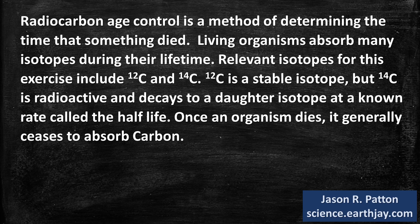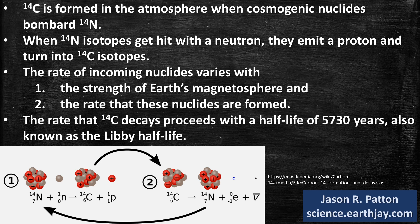Radiocarbon age control is a method of determining the time that something died. Living organisms absorb many isotopes during their lifetime. Relevant isotopes for this exercise include carbon-12 and carbon-14. Carbon-12 is a stable isotope, but carbon-14 is radioactive and decays to a daughter isotope at a known rate called the half-life. Once an organism dies, it generally ceases to absorb carbon. Carbon-14 is formed in the atmosphere when cosmogenic nuclides bombard nitrogen-14; when these nitrogen-14 isotopes get hit with a neutron, they emit a proton and turn into carbon-14 isotopes. The rate of incoming nuclides varies with the strength of the magnetosphere. The rate that carbon-14 decays proceeds with a half-life of 5,730 years, also known as the Libby half-life.